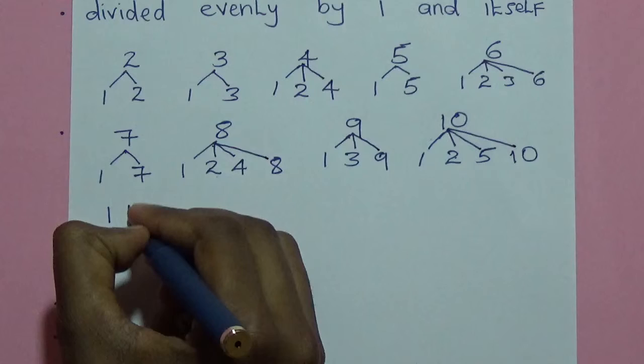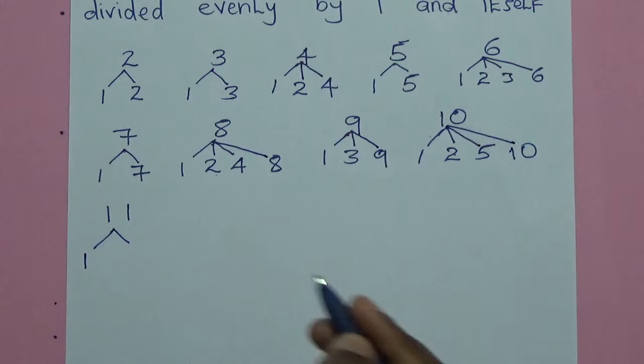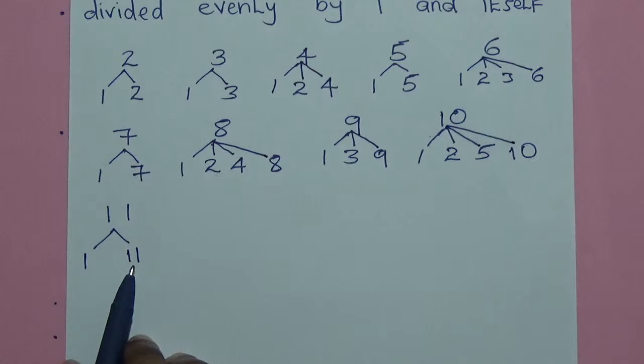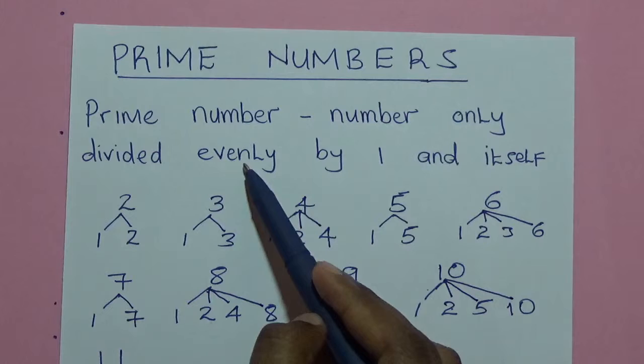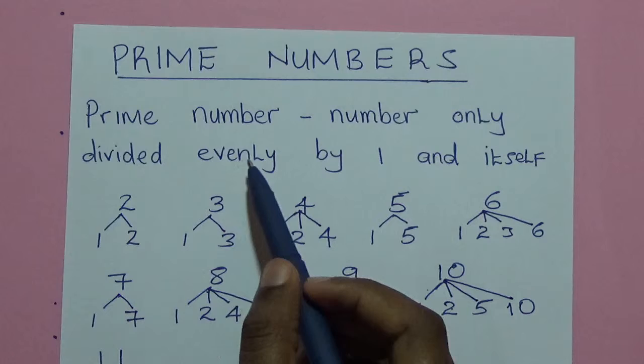We look at maybe number 11. Number 11 can only be divided by 1 and itself which is 11. It cannot be divided by any other number. Now we go back to the definition of a prime number. A prime number is a number only divided evenly by 1 and itself. By the word evenly, we mean that there is no remainder.